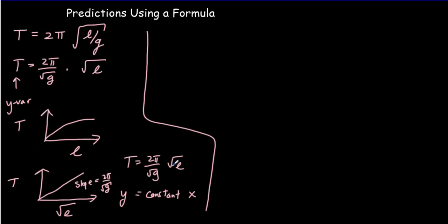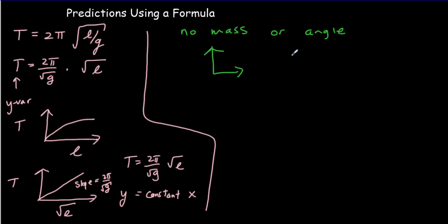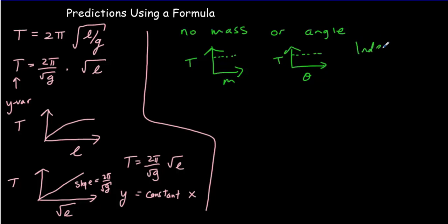We can take this further by noticing that in the formula there's no mass or angle. So mass and angle don't affect the period. If we were to do graphs of mass versus period and angle versus period, we should get straight horizontal lines — no matter what the mass or the angle of release is, we get the same period. These variables are considered independent of the period.